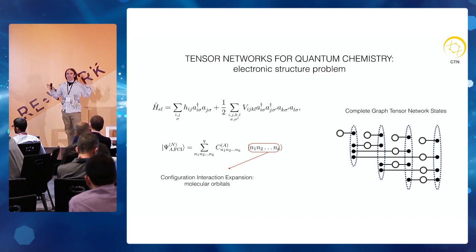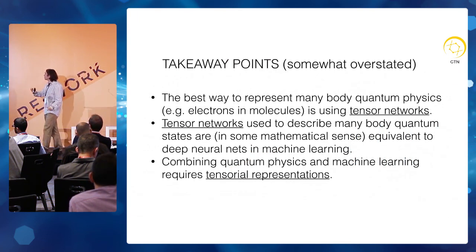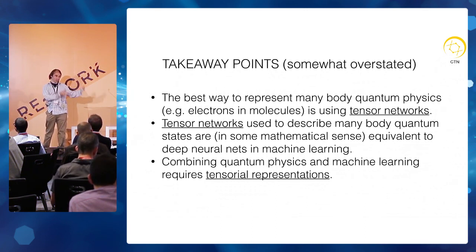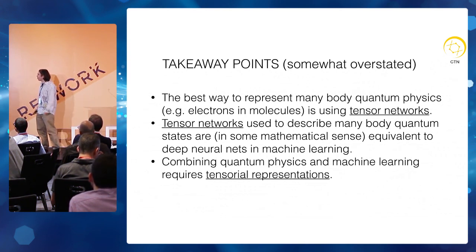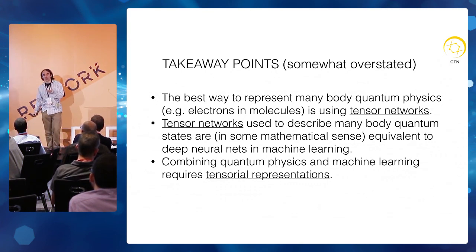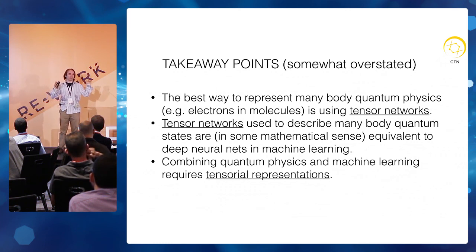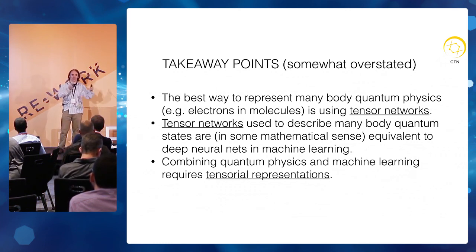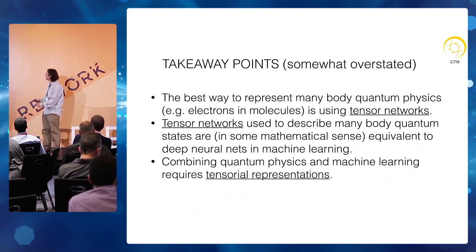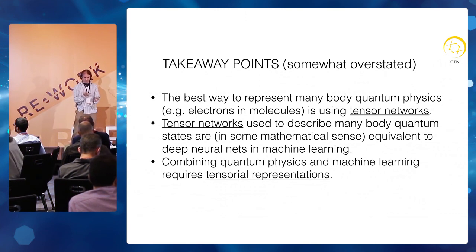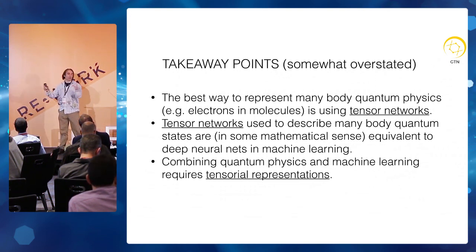The takeaway points, somewhat simplified: the best way to represent many-body quantum physics is using tensor networks, which are closely related to deep neural nets. The tensor networks used in many-body quantum physics are in some sense equivalent to deep neural nets — they have the same representational power, though sometimes it's wiser to take one approach over the other. For complex inputs like actual molecules and wave functions, you really need to work with both these things together, which is what we're trying to do.